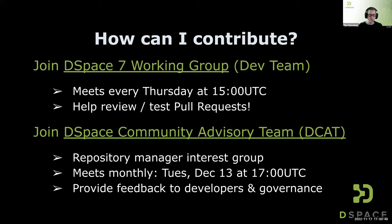If you're less technical or just want to talk DSpace with other people who use DSpace, the DSpace DCAT meetings are a great place to do that — that's our Repository Manager Interest Group. They meet on a monthly basis with the next one in mid-December. This group is very important for providing feedback back to developers and to governance. They help with use cases, answer questions about how things are used in DSpace, and provide a user perspective when developers have questions about how a feature may function.